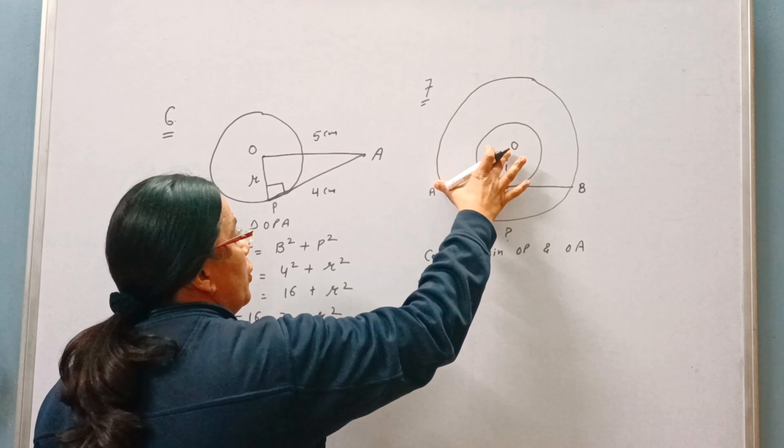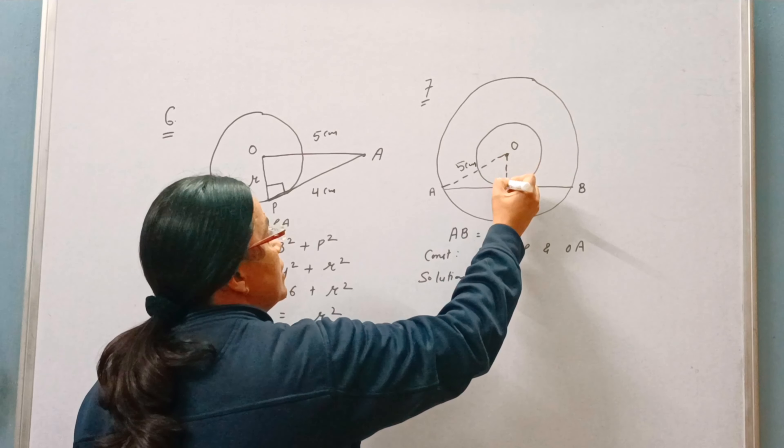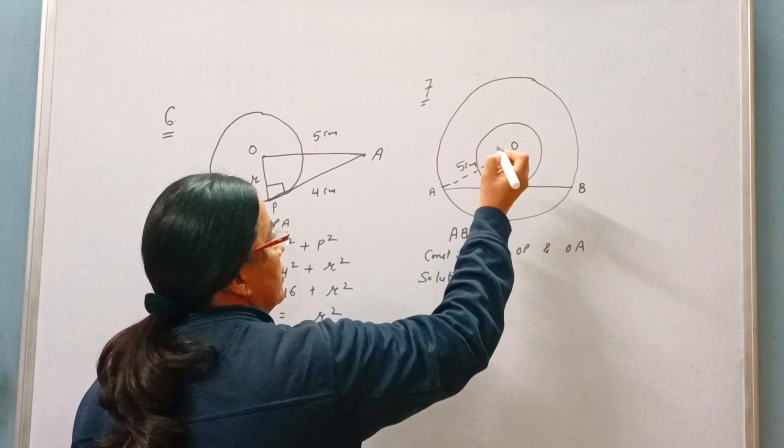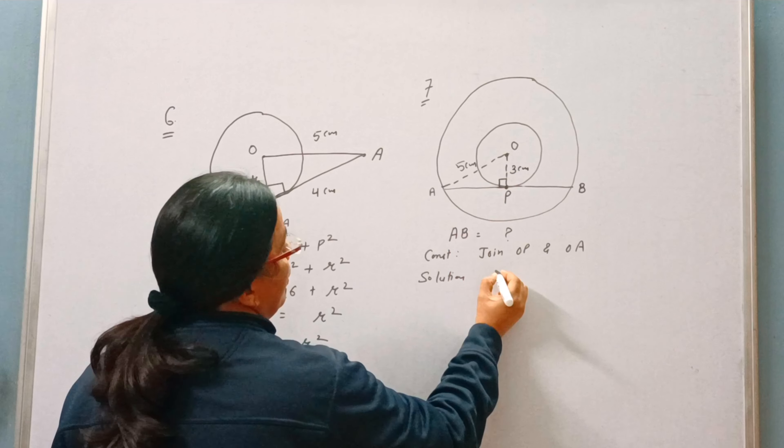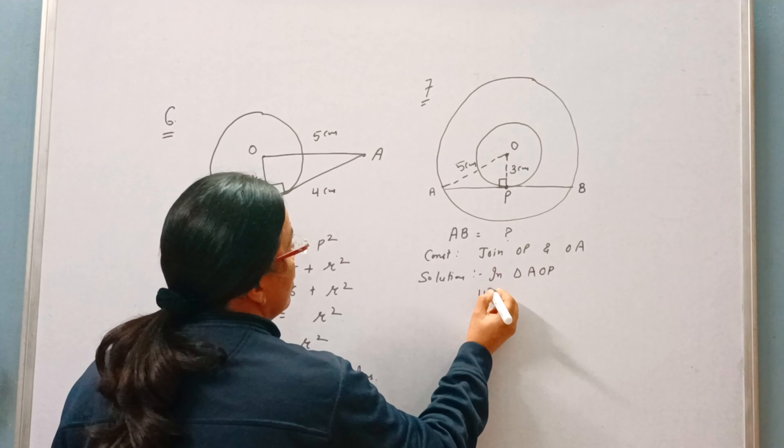Now this OA is the radius of the bigger circle, so it is 5 cm. OP is the radius of smaller circle, that is 3 cm. Now in triangle AOP we can apply Pythagoras.